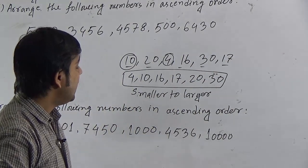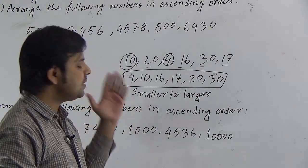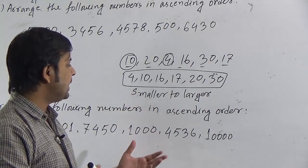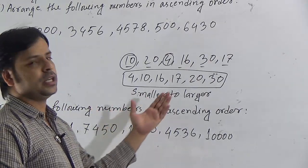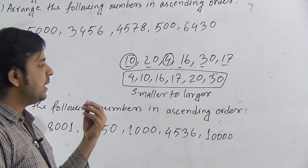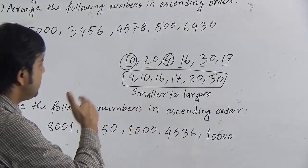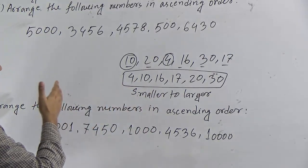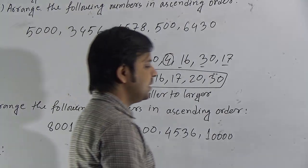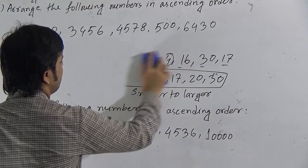Ascending order means we have to arrange the numbers following an order — smaller to larger. At first we write the smallest one, then we write a number greater than the first one, and in this way we arrange all the numbers. Dear students, let us solve.